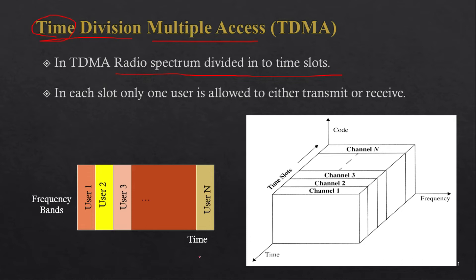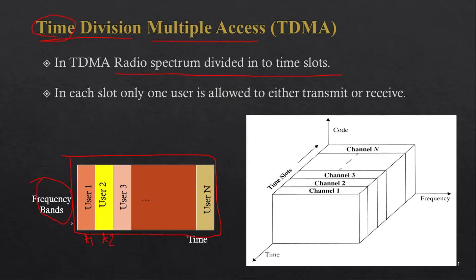In TDMA, the radio spectrum is divided into time slots. Looking at this first figure, if we have this whole frequency band, we are dividing that frequency band in terms of time. Each user will access the whole frequency band for some particular amount of time — user 1 for t1, user 2 for t2, and so on up to user N. This switching is cyclic.